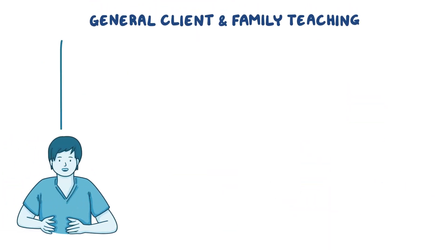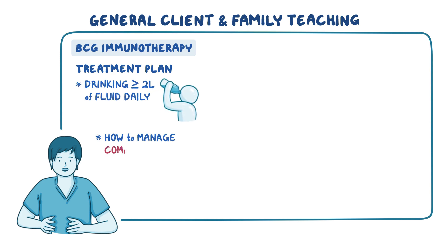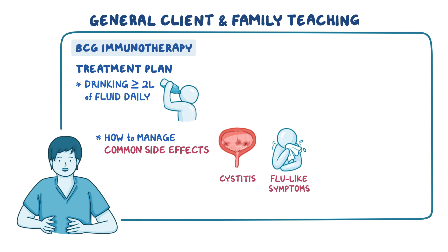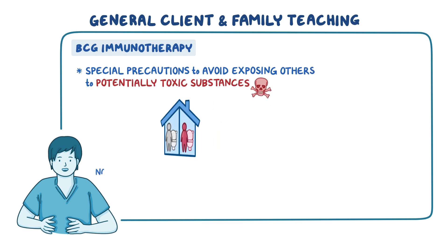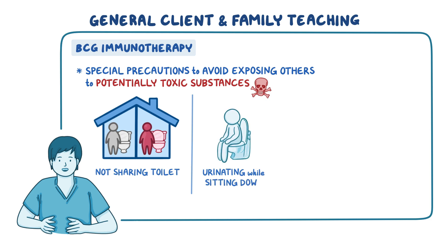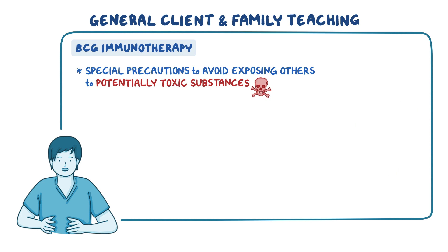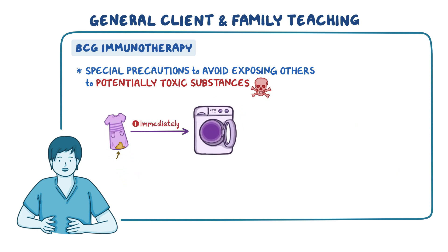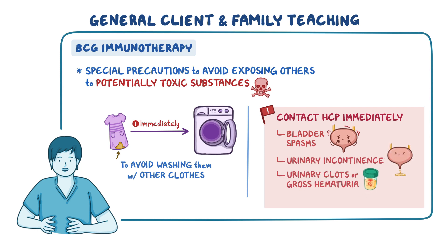For clients treated with BCG immunotherapy, teach them their treatment plan, including the importance of drinking at least two liters of fluid daily and how to manage common side effects such as cystitis or flu-like symptoms. Include special precautions to avoid exposing others to potentially toxic substances: not sharing a toilet, urinating while sitting to avoid splashing, adding two cups of bleach to the toilet after urinating, closing the lid, and waiting 15 minutes before flushing. If clothes contact urine, wash them immediately and separately. Instruct them to contact their healthcare provider immediately for bladder spasms, urinary incontinence, urinary clots, gross hematuria, or inability to empty the bladder.